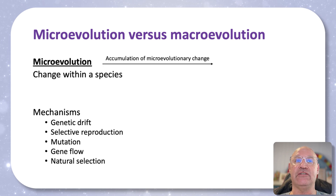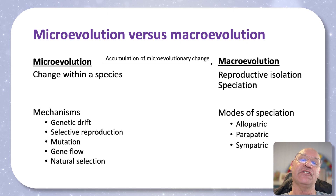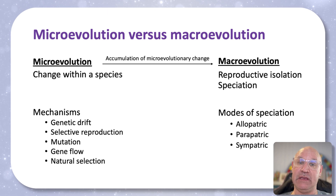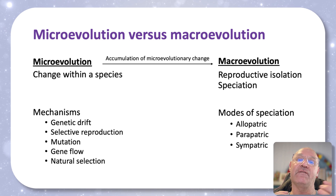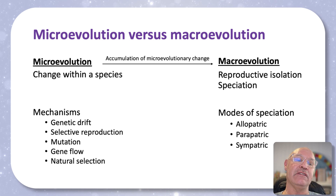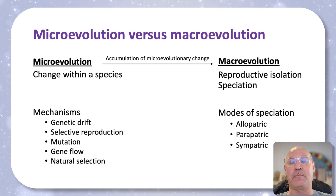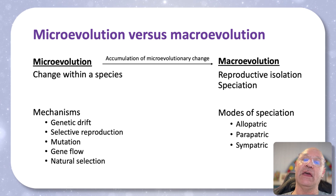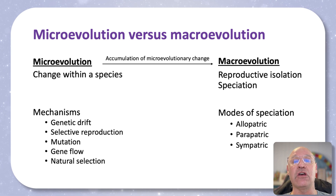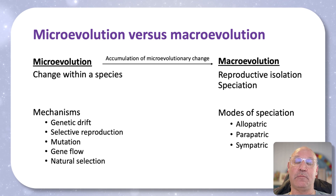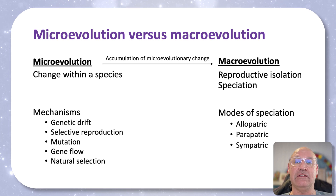Macroevolution is then just an accumulation of those microevolutionary changes such that we achieve speciation — new species form. New species that are reproductively isolated. Thinking about the biological species definition, organisms of the same species are able to reproduce and produce fertile offspring. So if they're no longer able to do that, they're reproductively isolated and they're different species. Accumulation of microevolutionary change can produce new species.